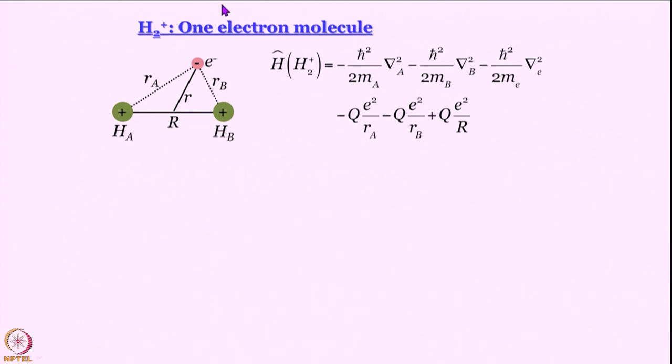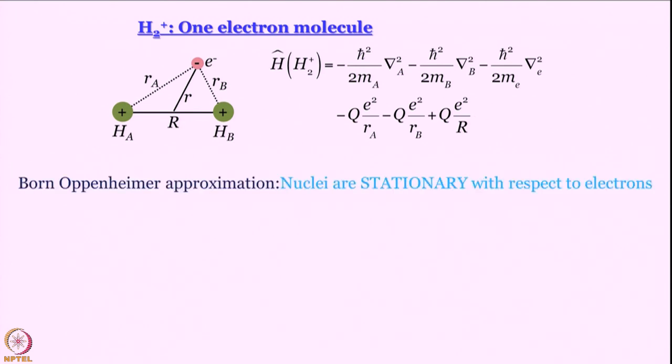Now, before proceeding further, internuclear repulsion can be a potential problem. Fortunately, that is taken care of by this very elegant approximation proposed by Born and Oppenheimer.